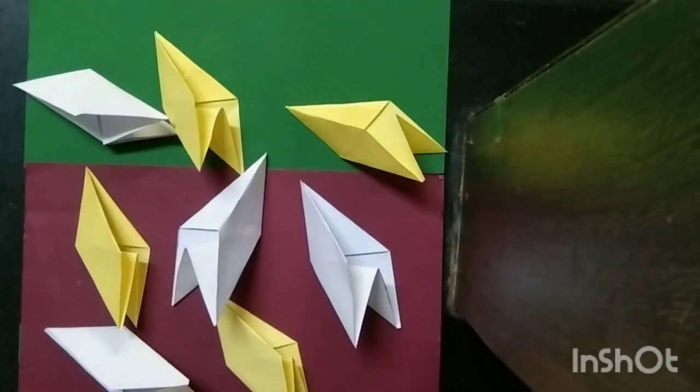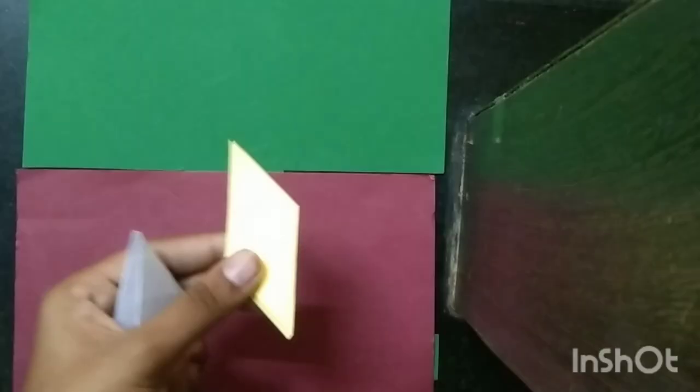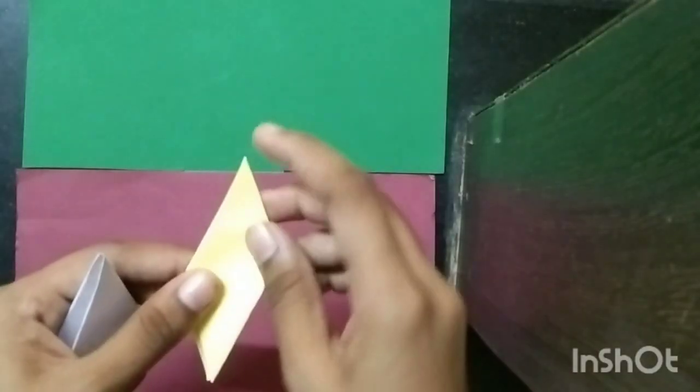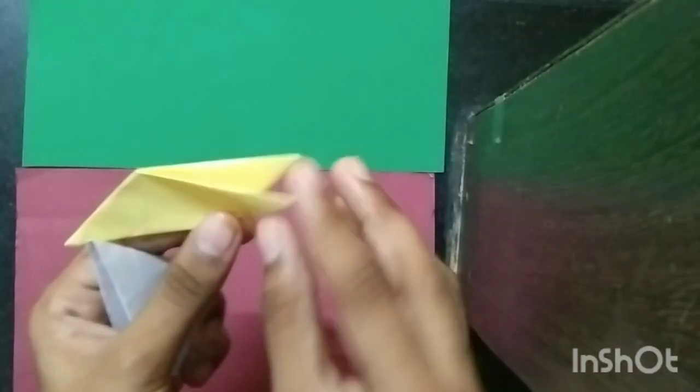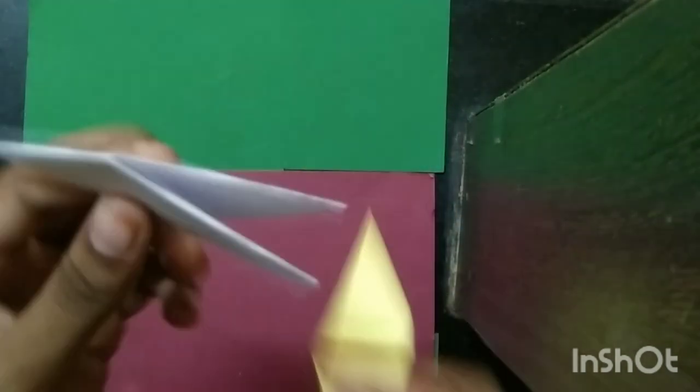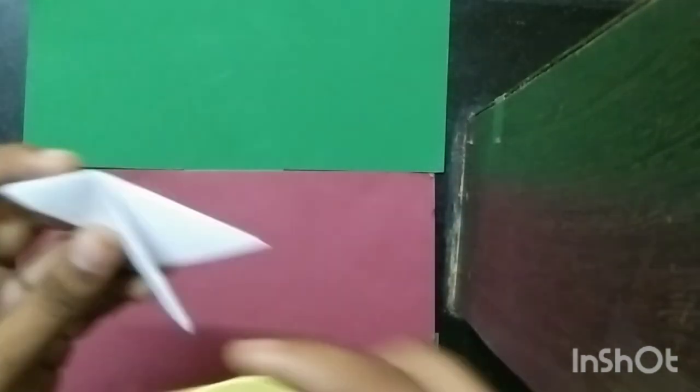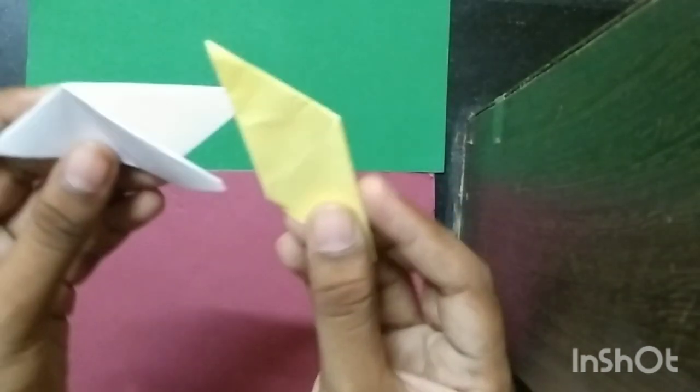Now after you have got like this, we are going to insert it. So first let me explain. This is the nose part and this is the tail part. So first you are going to take a paper's tail part and you are going to insert the nose part diagonally like this.